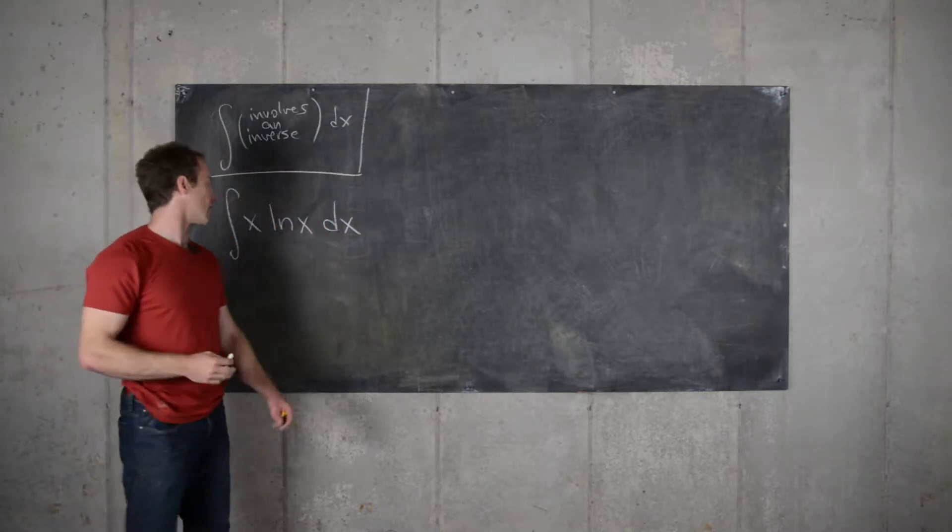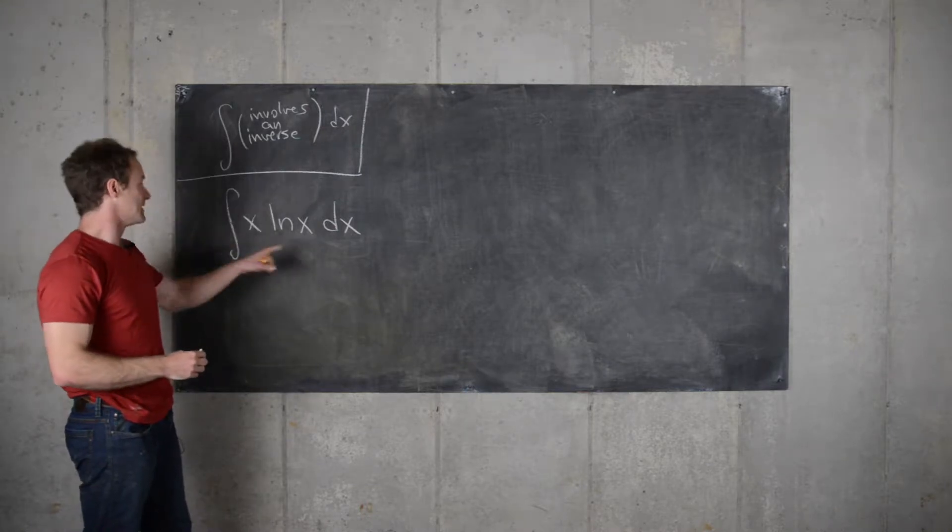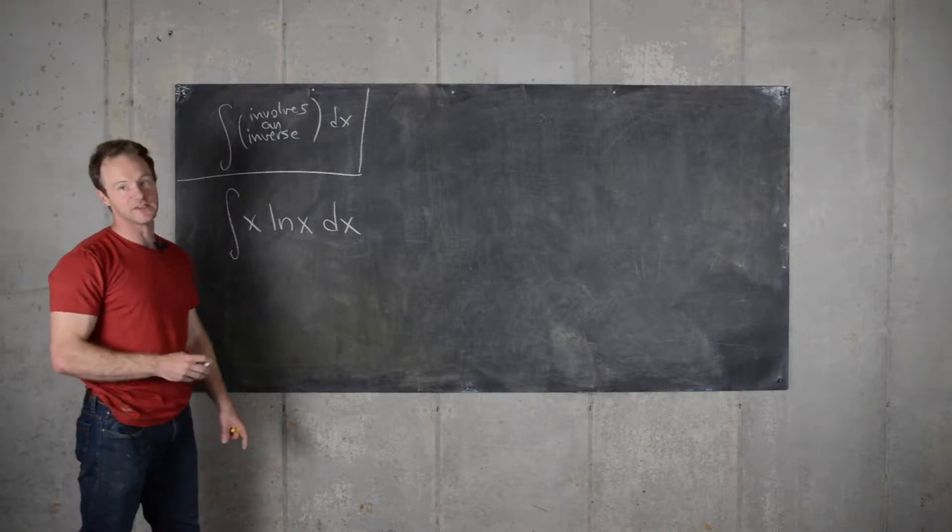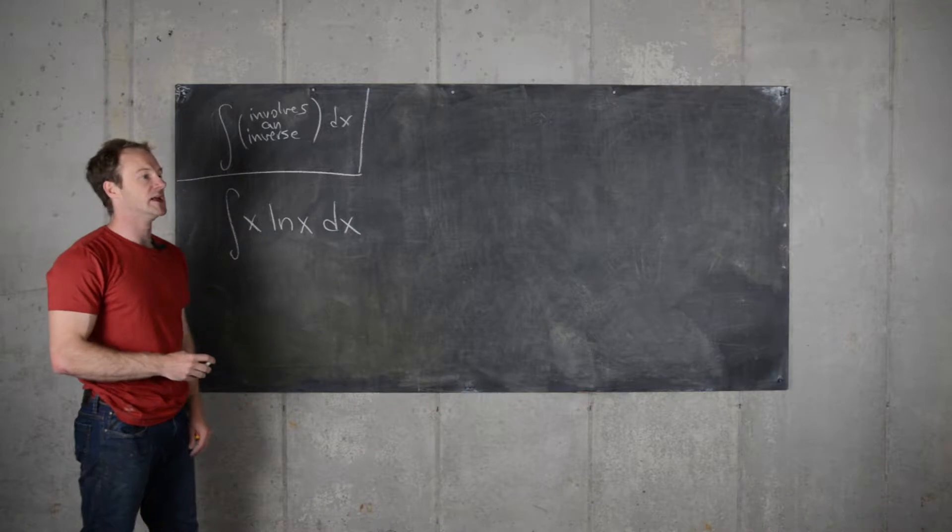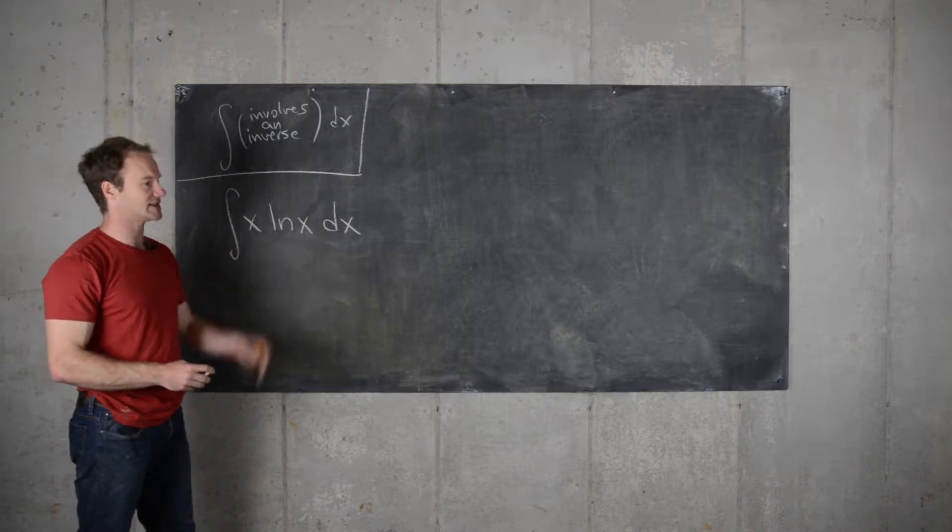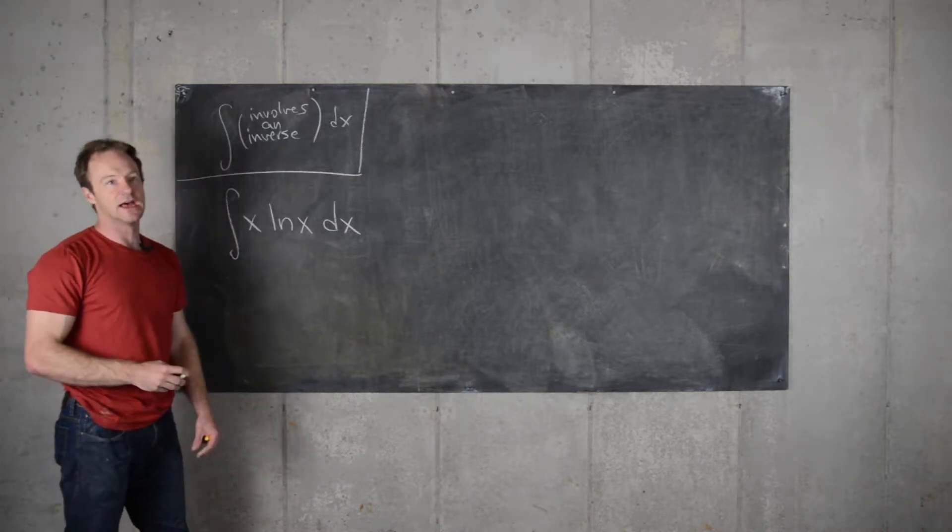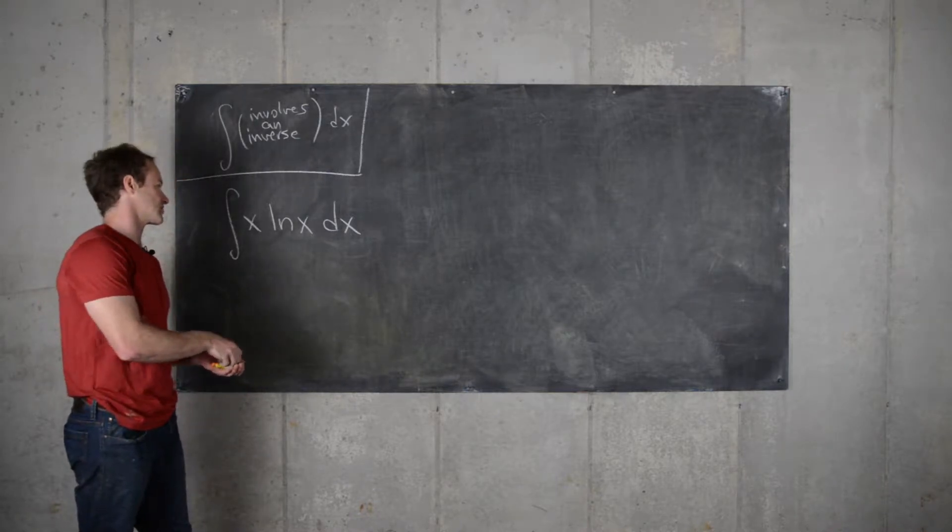And the trick for all of these is we want to use the fact that we know the derivative of these inverse functions very well in order to apply that to integration by parts and find the anti-derivative of things involving these functions.